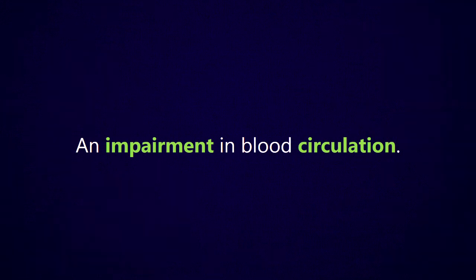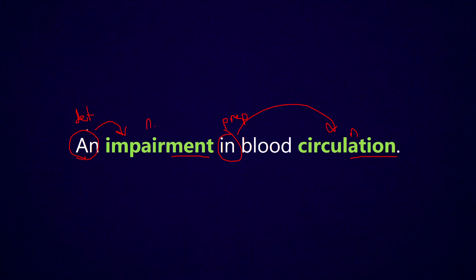In the sentence fragment 'an impairment in blood circulation,' suffixes are really helpful here. The word 'impairment' has the -ment suffix and 'circulation' has the -ation suffix — both are very common noun suffixes. Also, the word 'an' only works as a determiner, and determiners go with nouns, so 'impairment' is the noun after 'an.' Then 'in' is a preposition, and after prepositions we have nouns — so 'circulation' is a noun too. Notice there's a period but no verb, so this isn't a complete sentence.